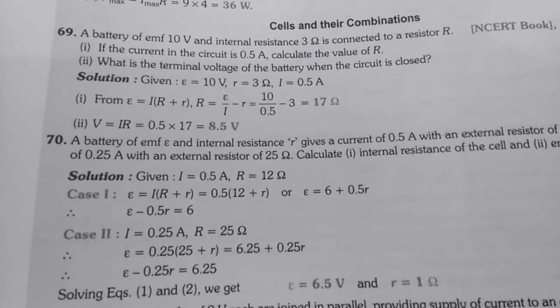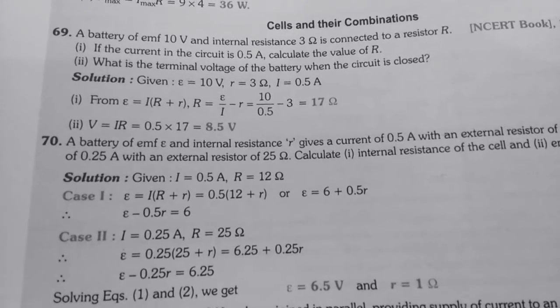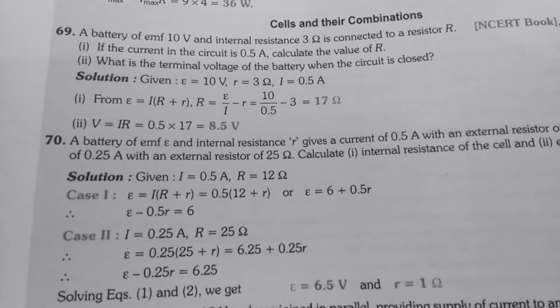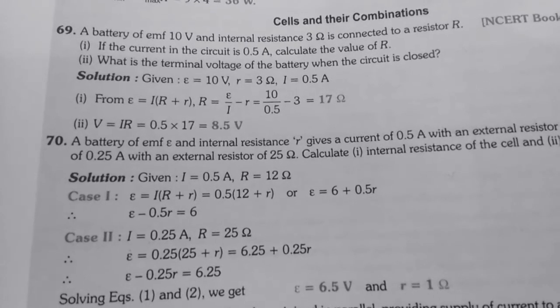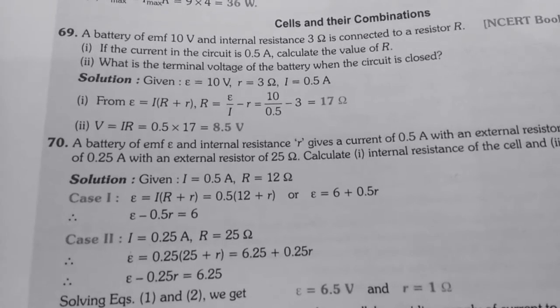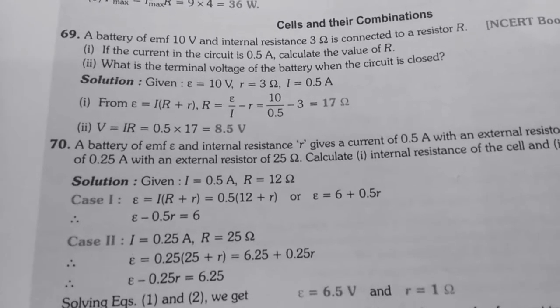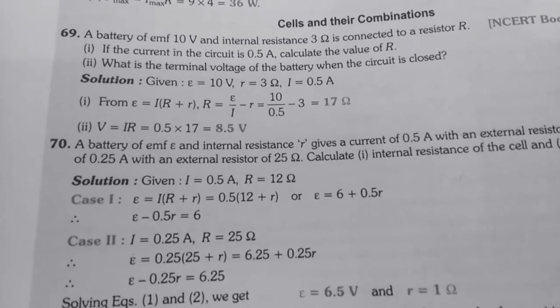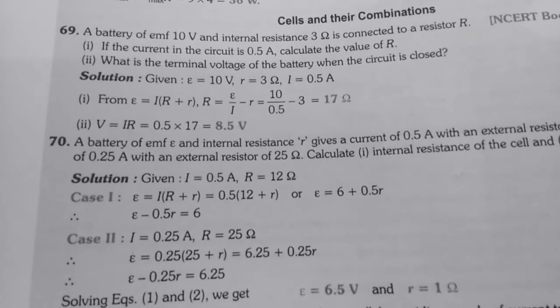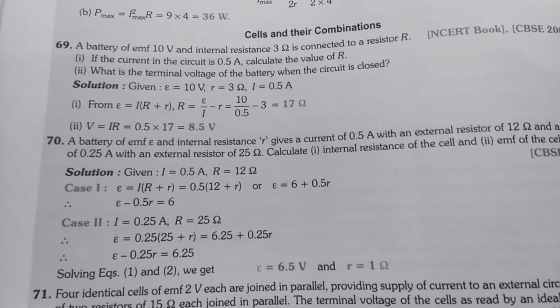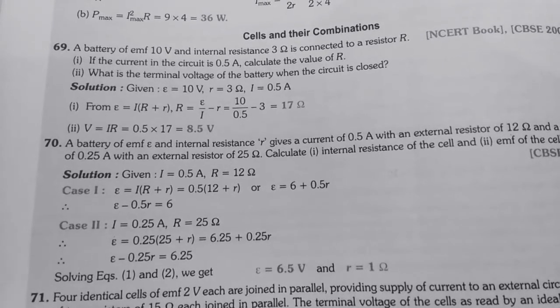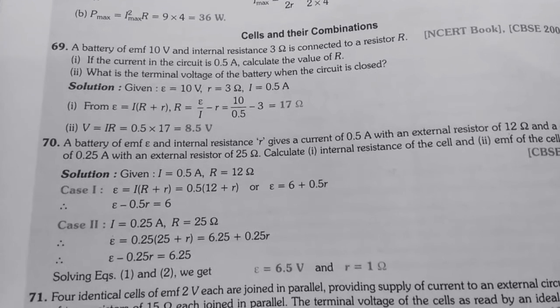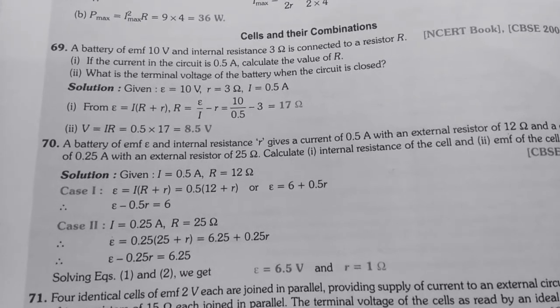So let's discuss the first numerical which is from NCERT book. A battery of EMF 10V and internal resistance 3 ohm is connected to a resistor R. First, if the current in the circuit is 0.5A, calculate the value of R. Second, what is the terminal voltage of the battery when the circuit is closed?